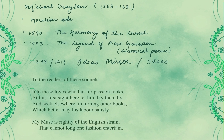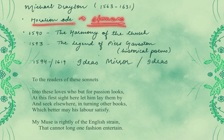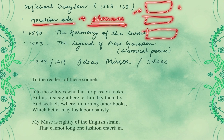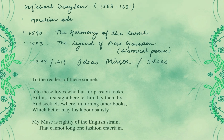Horatian Odes, on the other hand, have stanzas that are all similar to one another. Stanza one, stanza two — all have the same rhyme scheme, the same meter, and the same line length. That is what you call a Horatian Ode. So basically, you are writing a poem of praise following the style of Horace.